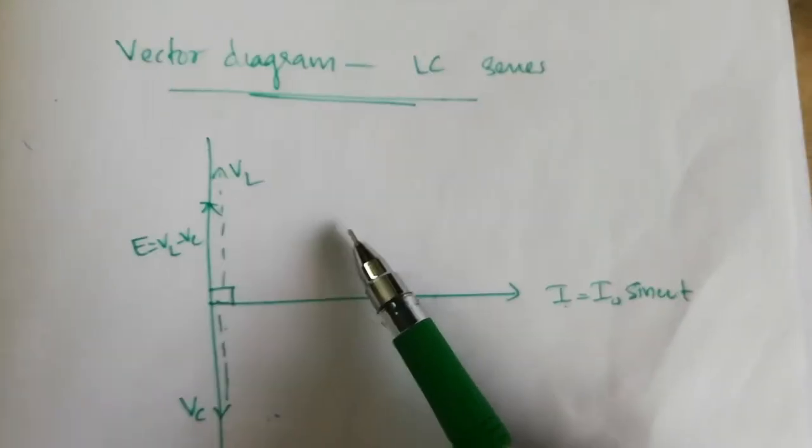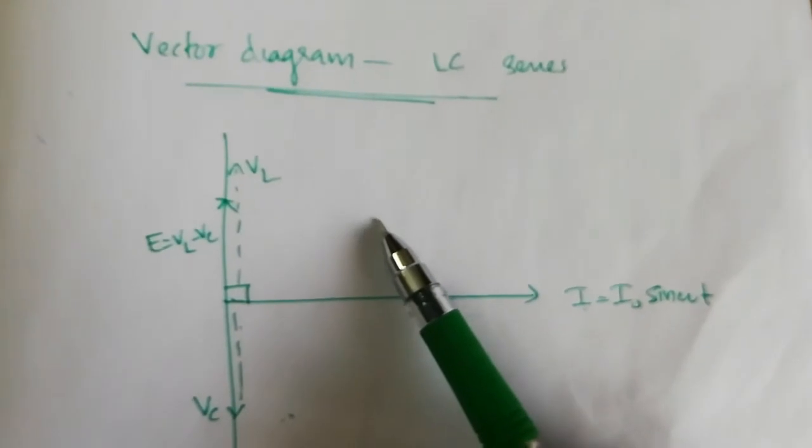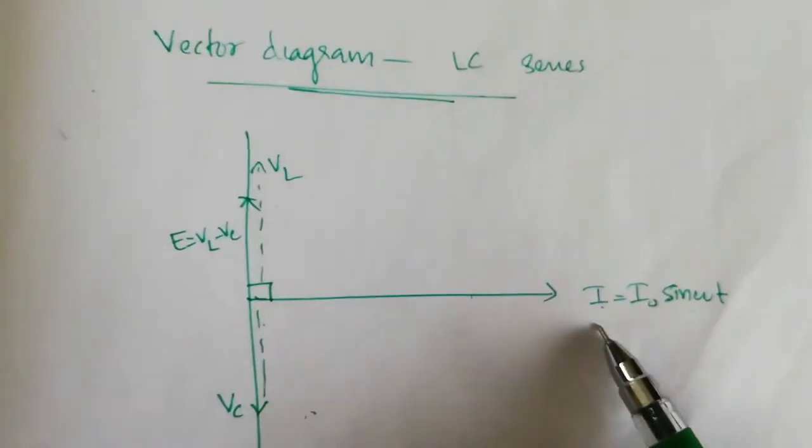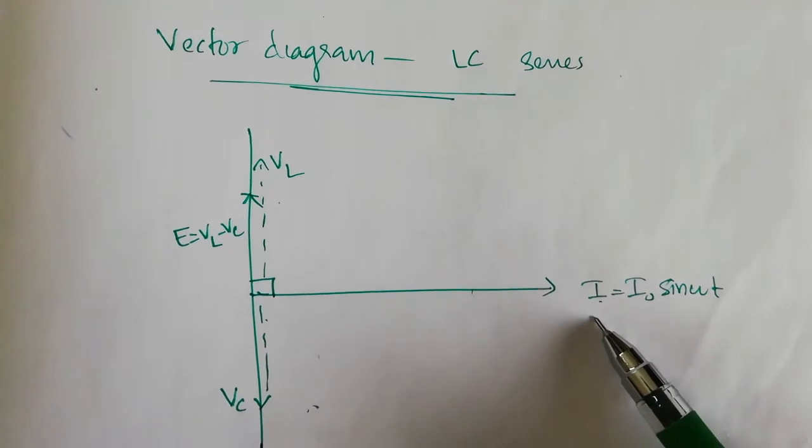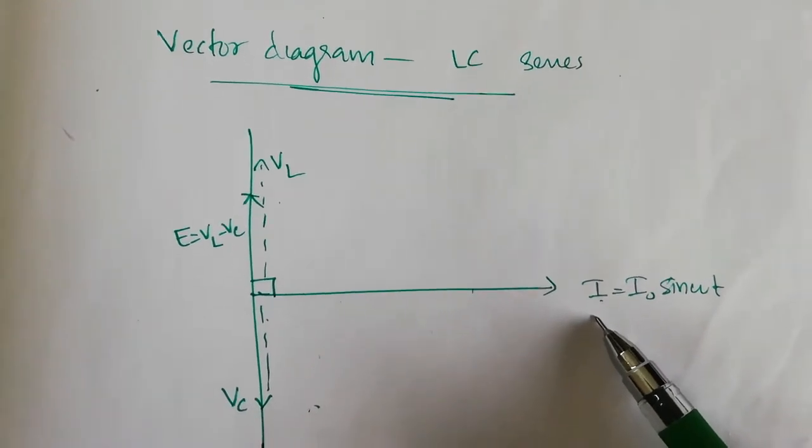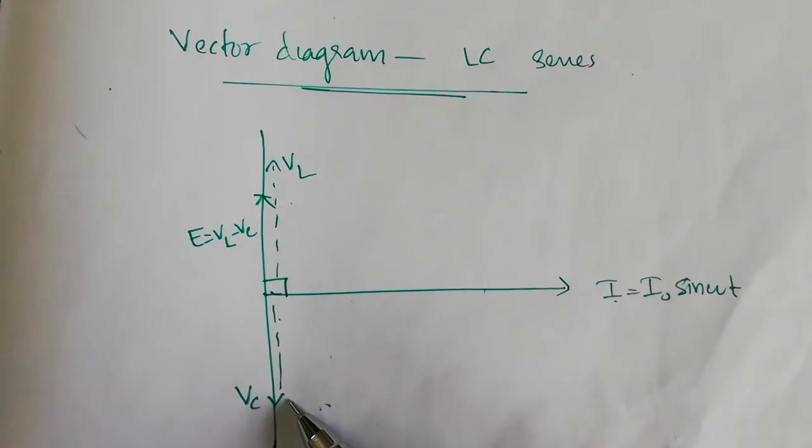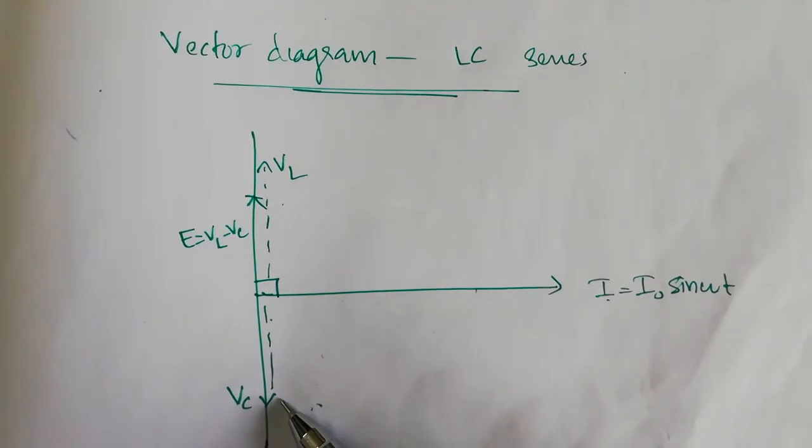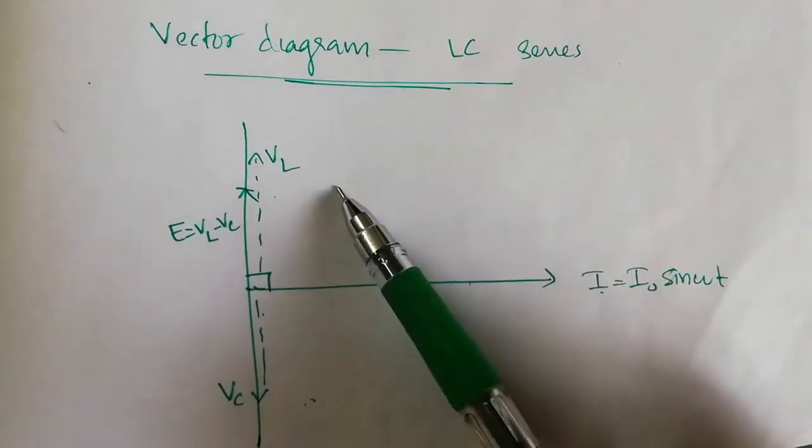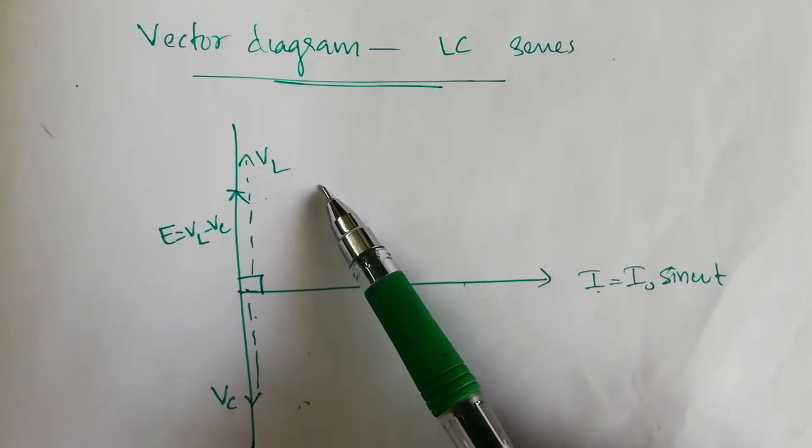Now we can explain all this easily using the vector diagram. As this is the current passing through the LC series circuit, as we have already studied, the EMF across the capacitance is lagging the current by an angle pi by 2, and across the inductance is leading the current by an angle pi by 2.